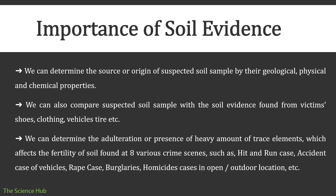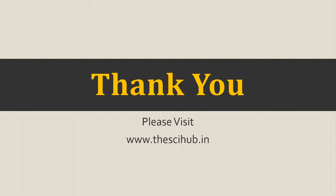The importance of soil evidence: we can determine the source or origin of suspected soil samples by their geological, physical, and chemical properties. We can determine adulteration or the presence of heavy amounts of trace elements affecting soil fertility. Soil evidence is found in various crime scenes such as hit-and-run cases, vehicle accident cases, rape cases, burglaries, homicide cases in open outdoor locations, and many more. We can also compare suspected soil samples with evidence found on victims' shoes, clothing, vehicles, vehicle tires, and many more places.